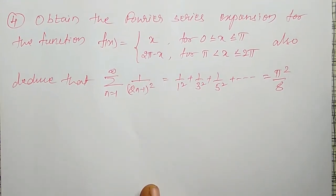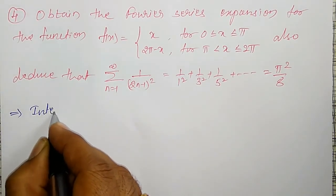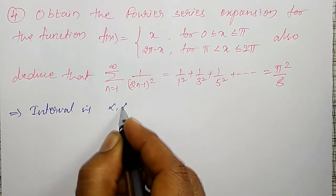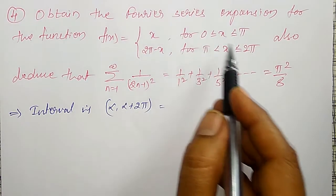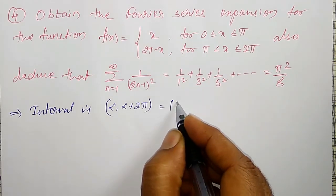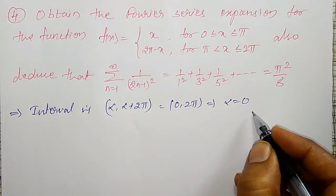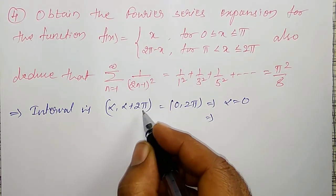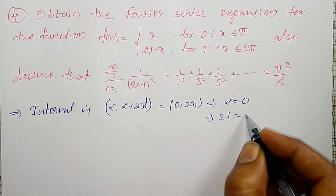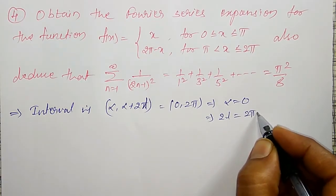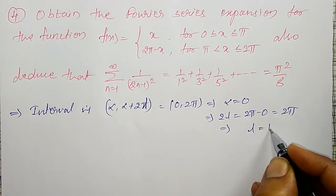First, what is the interval here? The interval is α to α + 2l, that is 0 to 2π, which implies α = 0. And α to α + 2l means 2l = 2π − 0, that is equal to 2π, which implies l is equal to π.